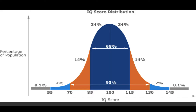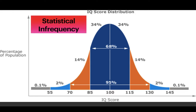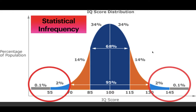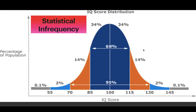Let me show you on this graph. This is the IQ score distribution. You can see 100 right in the middle — that's the average score, and most people will be around there. The range is actually between 85 to 115. From 85 to 115, that's the average range for most human beings on earth — around 68% of the human population. That covers the blue area. If you add 14% on one side and 14% on the other side, that range is between 70 to 130, covering 95% of the human population.